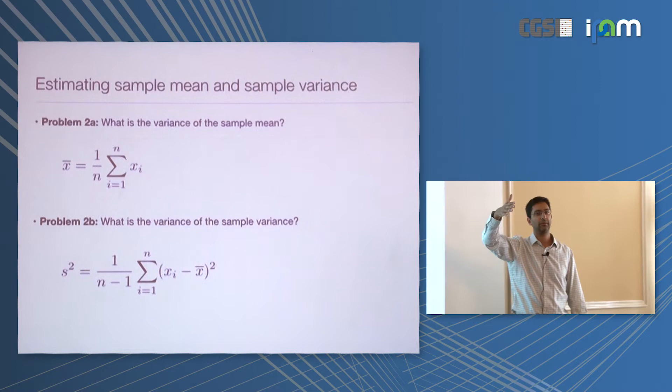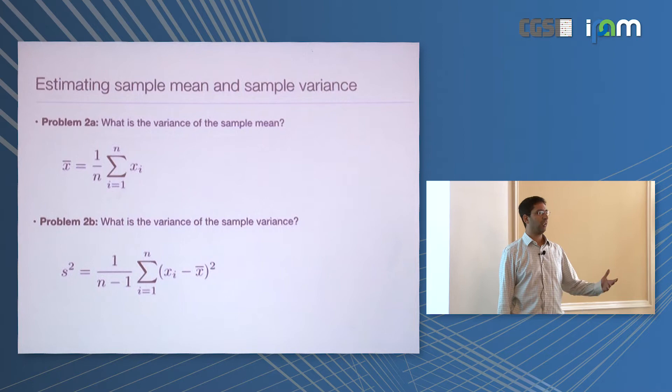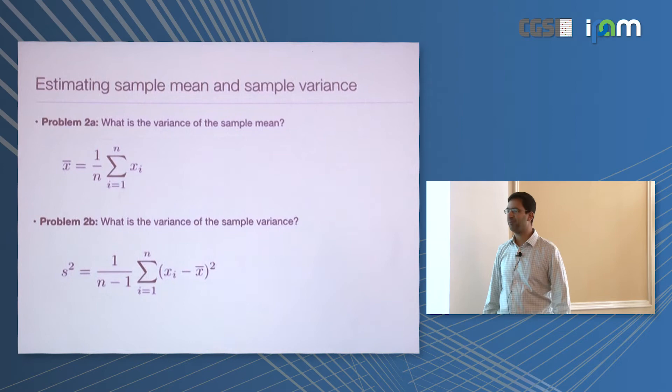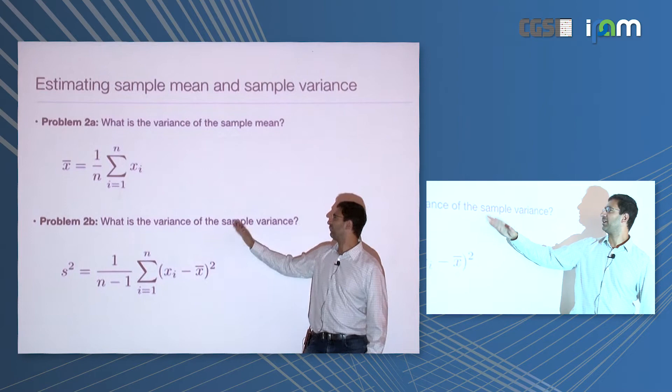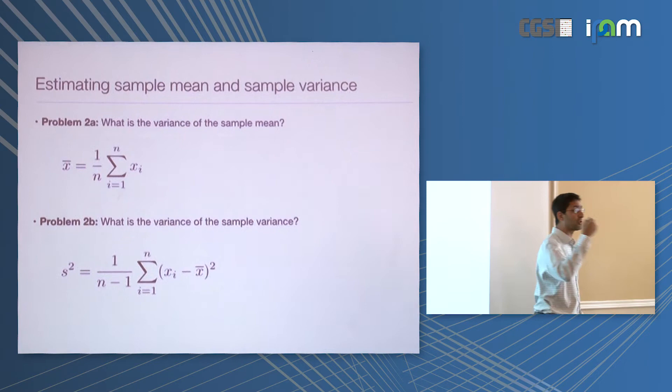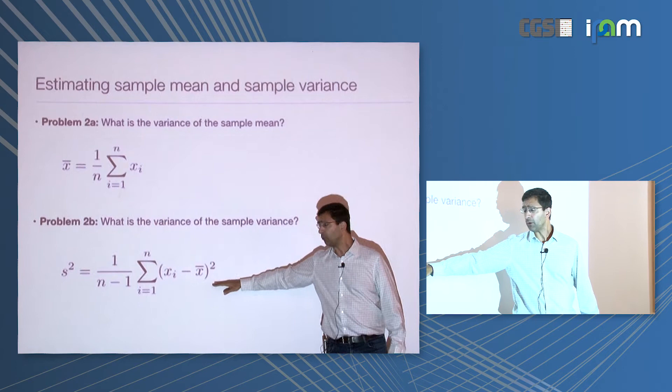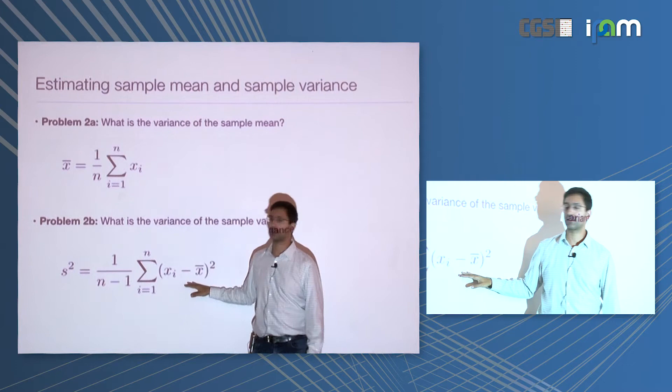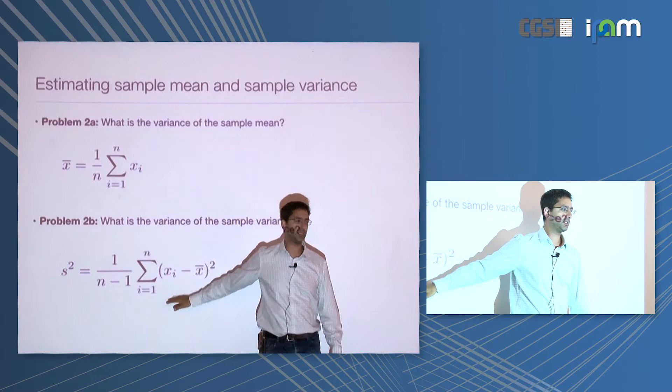The variance of the variance estimator goes like variance squared divided by roughly n. What that means is that to get a reasonable estimate of the variance of n numbers, you need many more replicates than to get the mean — it's a lot harder to estimate the variance. Let me show you in R.